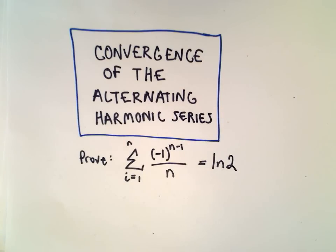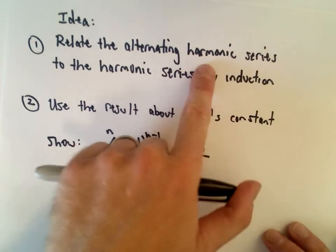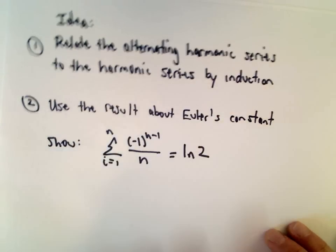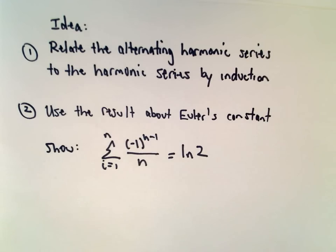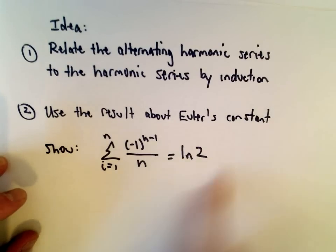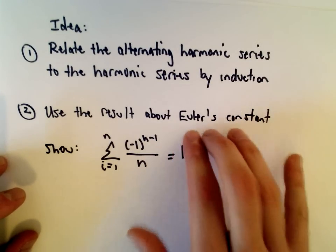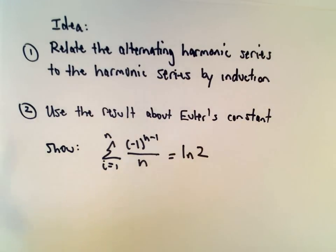In this video, I'm going to prove that the alternating harmonic series converges to the natural logarithm of 2. The basic idea is we're going to relate the alternating harmonic series to the harmonic series, and then use that result about Euler's constant to show the result we want. I'm not going to reprove everything about Euler's constant — you can check out that video if you want to see that information.